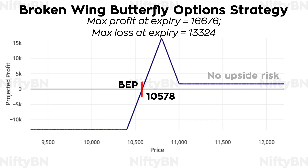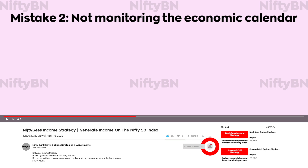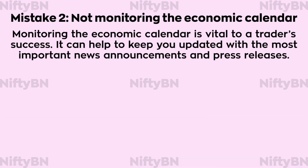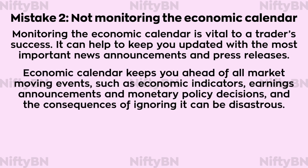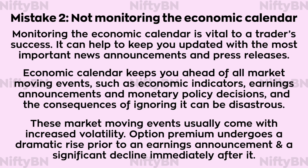Now let us look at one of the common mistakes made by beginners when they start trading options. We will also look at the possible adjustments that can be made to a troubled broken wing butterfly spread. Mistake number two: not monitoring the economic calendar. Monitoring the economic calendar is vital to a trader's success. It can help keep you updated with the most important news announcements and press releases — economic indicators, earnings announcements, and monetary policy decisions. The consequences of ignoring it can be disastrous, as these market-moving events usually come with increased volatility. Option premium undergoes a dramatic rise prior to an earnings announcement and a significant decline immediately after it, and if you don't keep a tab on such events you may have to suffer a significant drawdown.